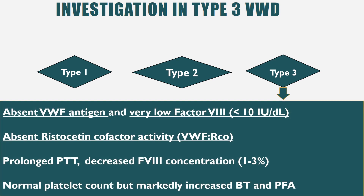In type 3 there is complete deficiency of von Willebrand factor. Investigation reveals absent vWF antigen level, very low factor VIII (less than 10 IU/dL), and absent ristocetin cofactor activity because this is a quantitative defect with complete vWF deficiency, so all functions of vWF are affected. APTT is prolonged, factor VIII is severely reduced (can be as low as 1–3%), platelet count is normal, but bleeding time is markedly increased and PFA is altered.